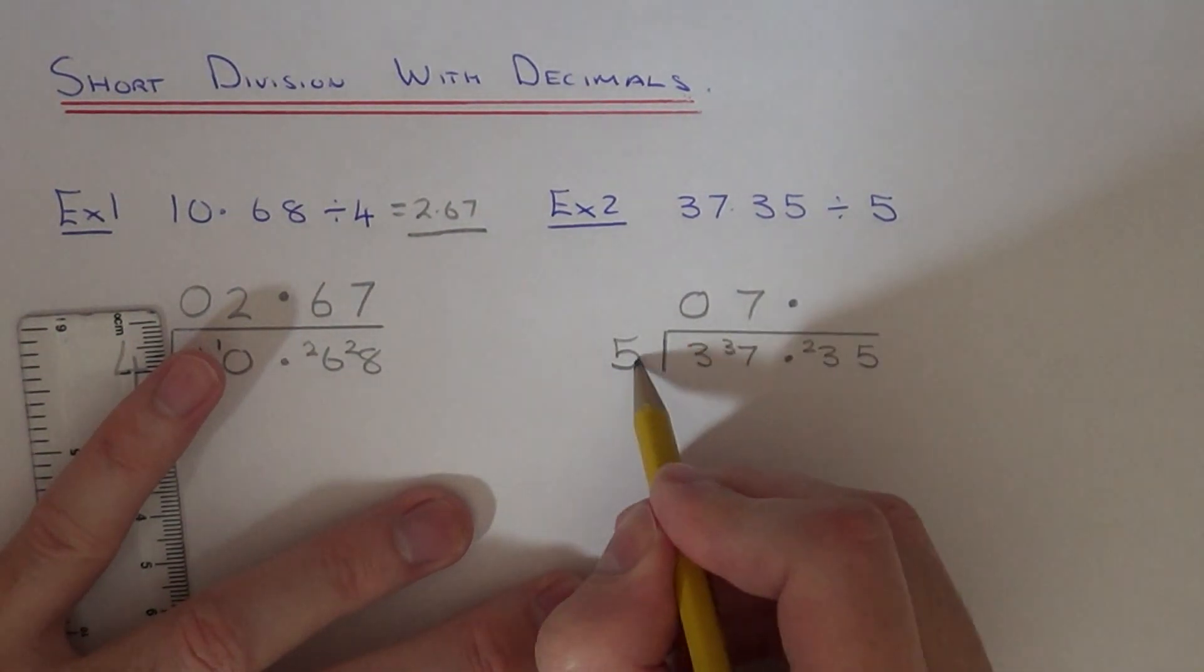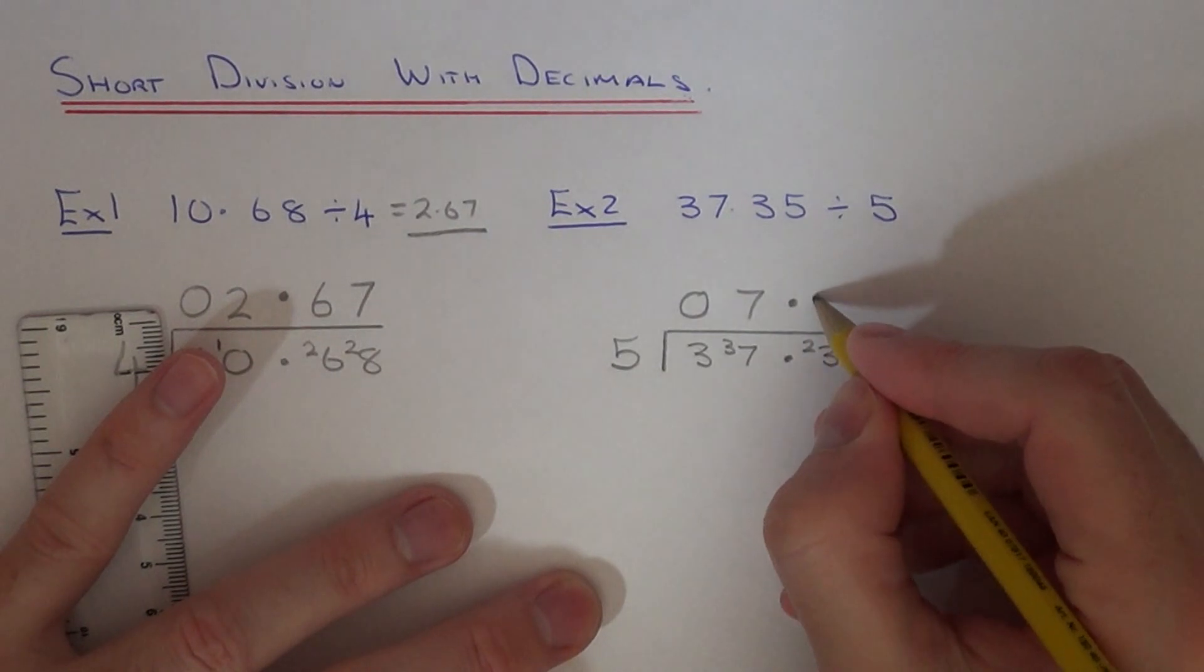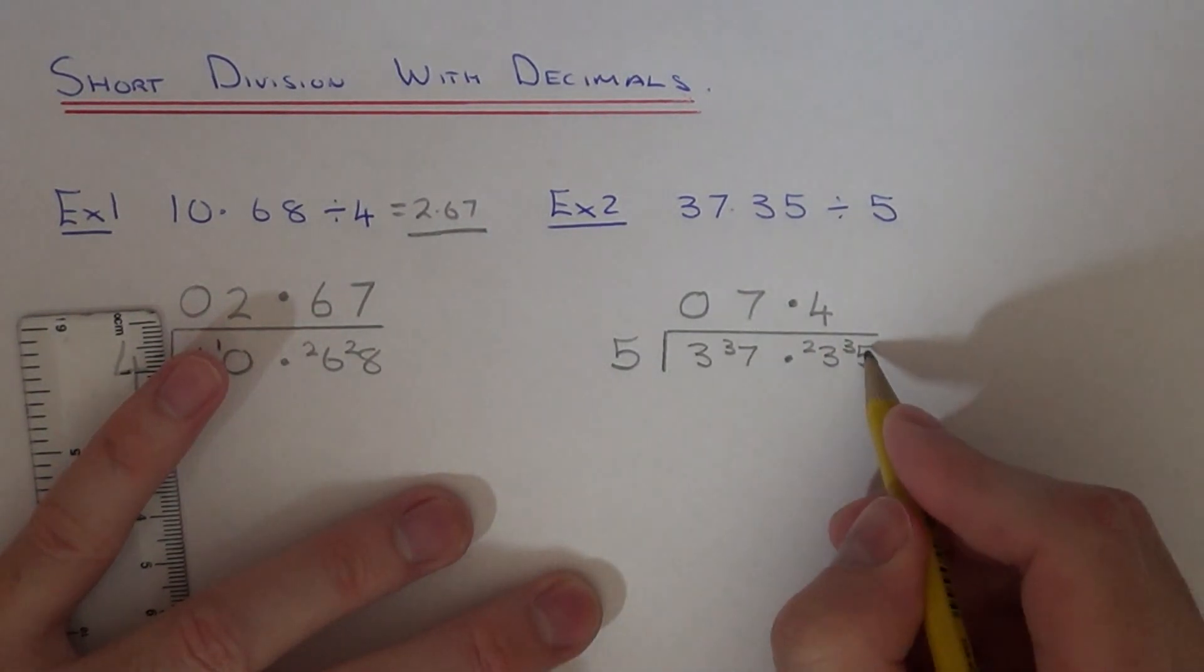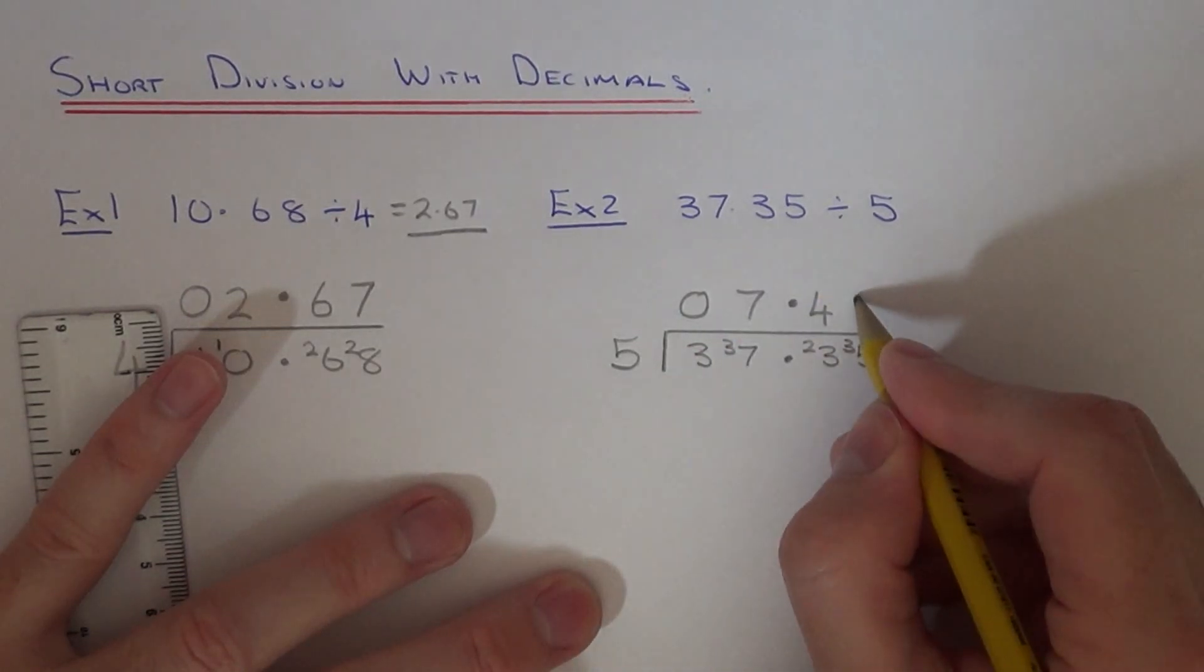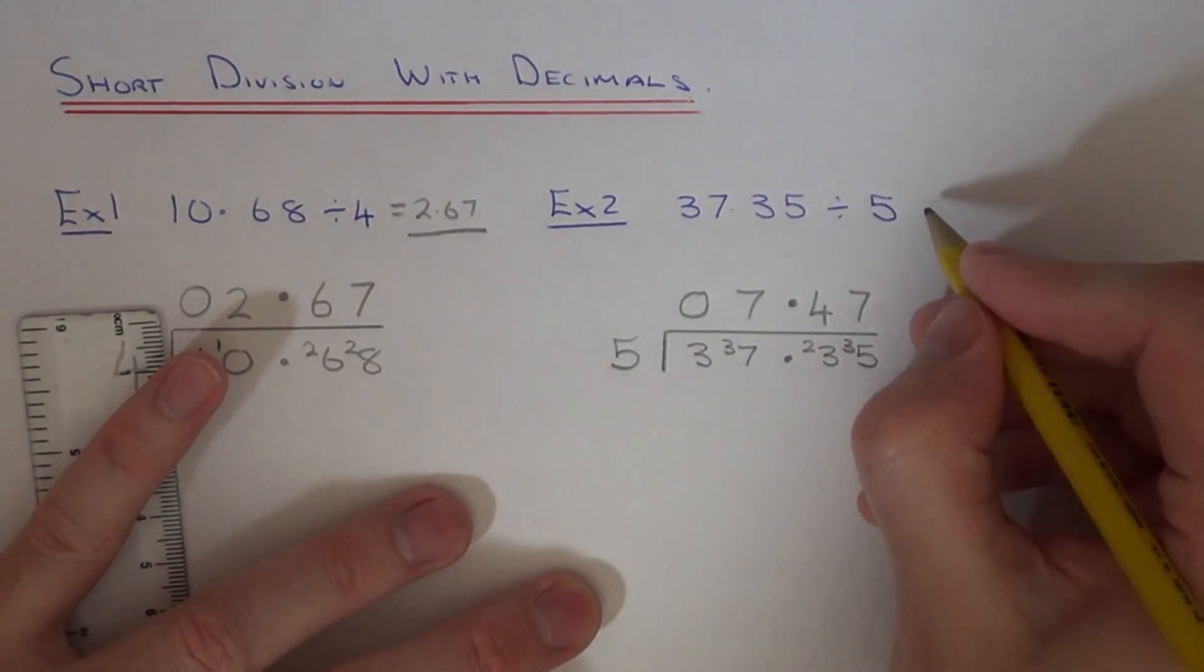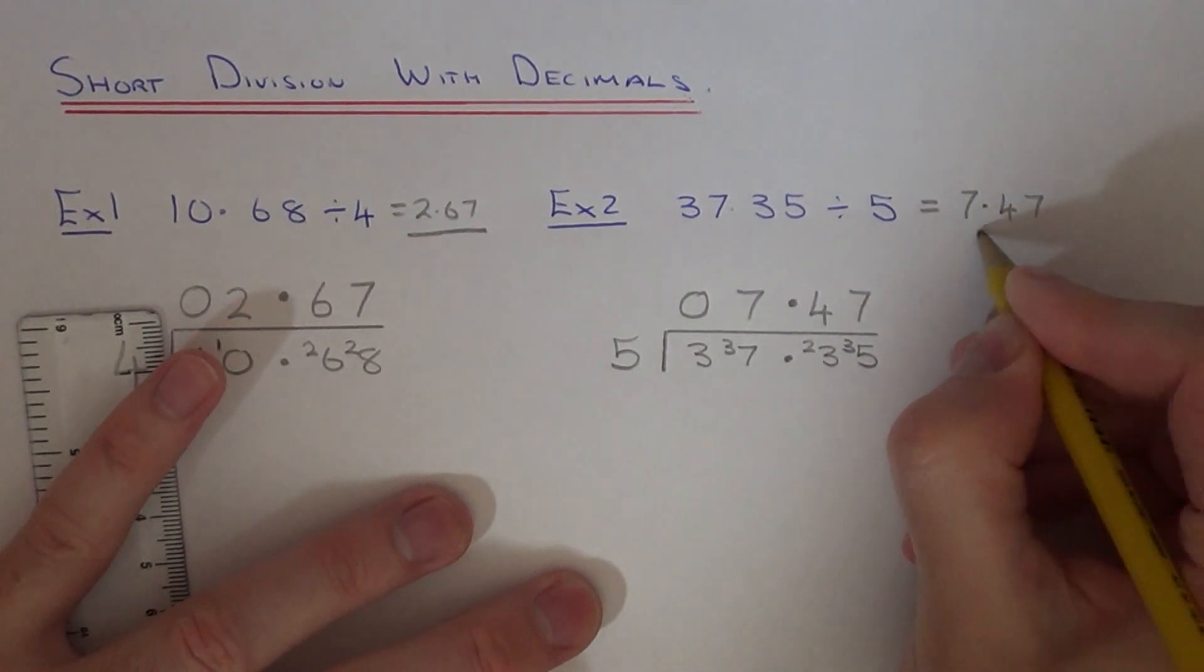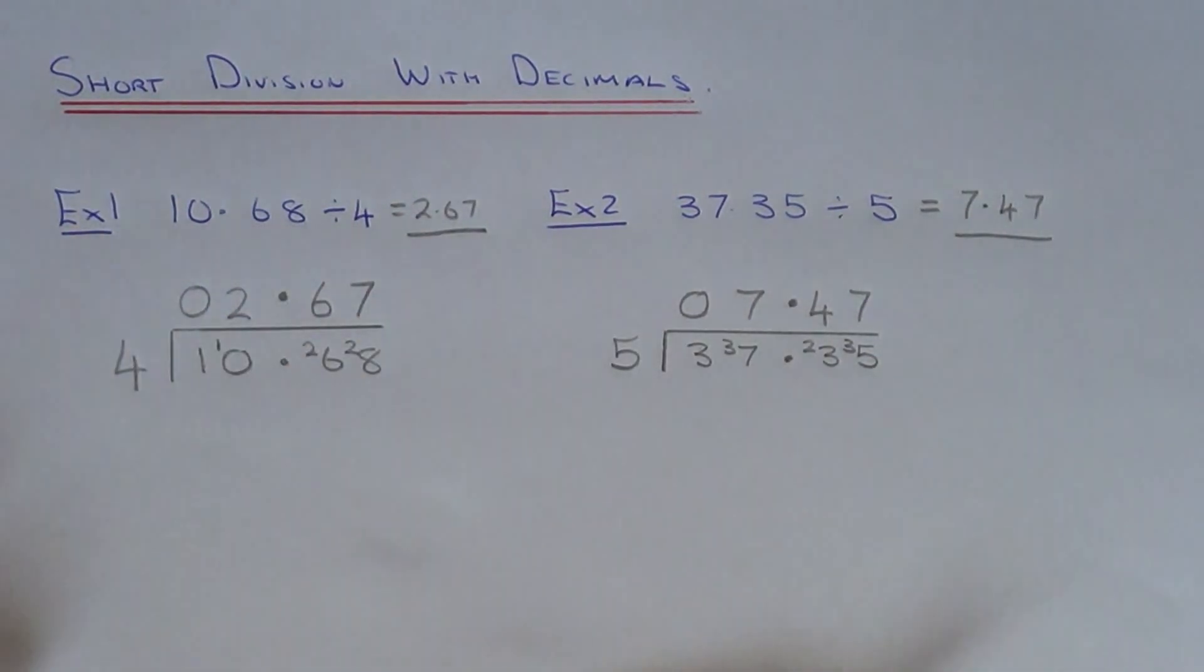You've got 23 divided by 5. That's 4 remainder 3. Finally you've got 35 divided by 5 which is 7. So your final answer is 7.47. Thanks for watching.